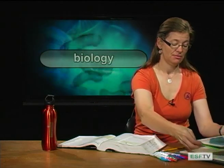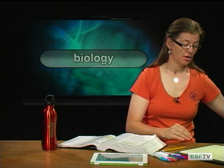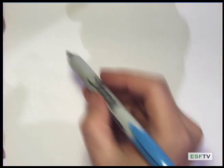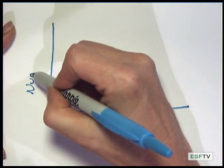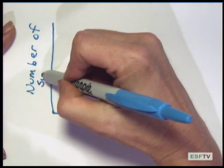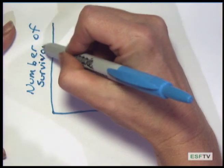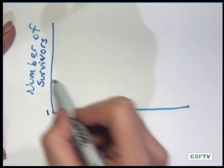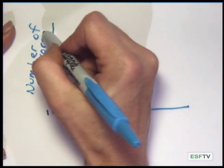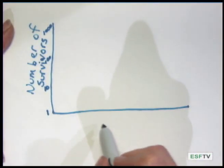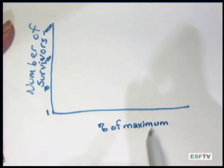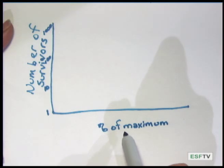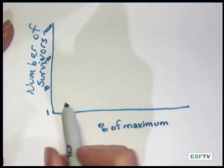Now let's draw this on the overhead. On the y-axis you represent the number of survivors on a logarithmic scale, with 1 at the base, then 10, 100, and 1000. Along the x-axis you have the percentage of maximum lifespan — this could be 80 years, one year, or one month — just representing the percentage of the maximum lifespan.